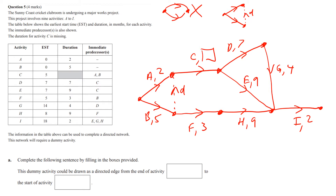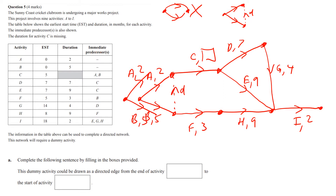You've got to make sure it agrees with your diagram. Starting here with our start node: A and B have no immediate predecessor, so here's A comma 2 and here is B comma 5. We've done A and B. Now C needs to be connected to A and B, but F only needs to be connected to B — so this is why you've got to look at which way your dummy goes.